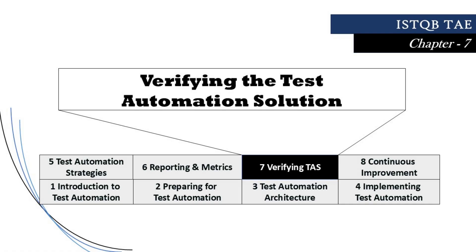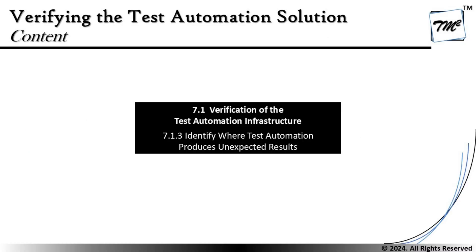Hello friends and greetings for the day. Welcome back to another tutorial on ISTQB Test Automation Engineer certification. We are in chapter 7, talking about verifying the test automation solutions, and moving on to segment 7.1.3 — identifying where test automation produces unexpected results — where we will be mainly concerned about how analysis of failures can take place.